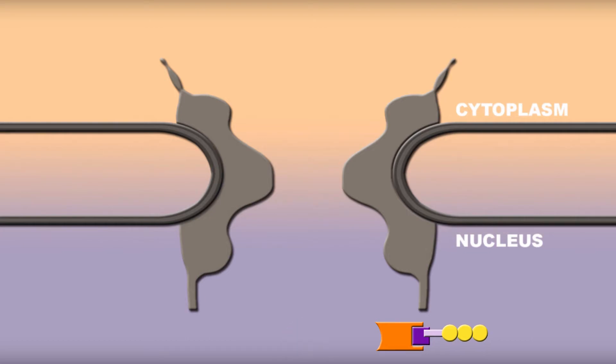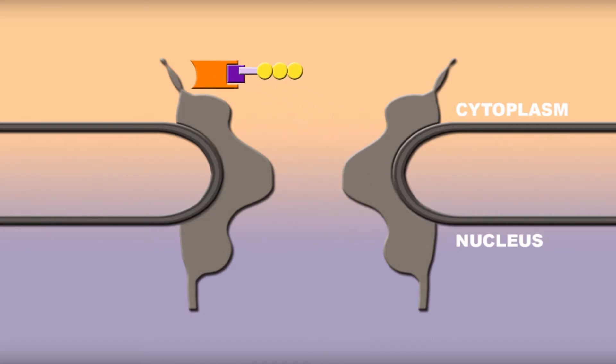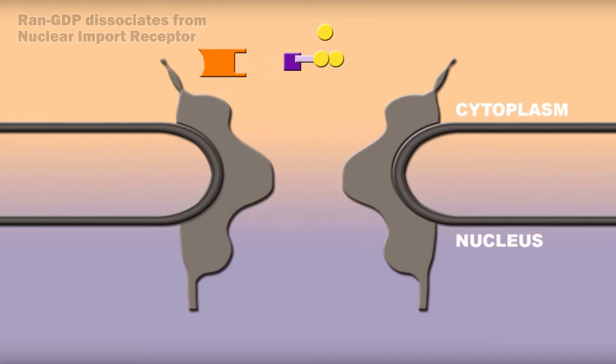After this exchange, the importin bound to RAN-GTP is transported back into the cytoplasm. RAN-GTP is hydrolyzed to RAN-GDP and inorganic phosphate, and dissociates from the importin. The importin can now be reused to transfer the next cargo.